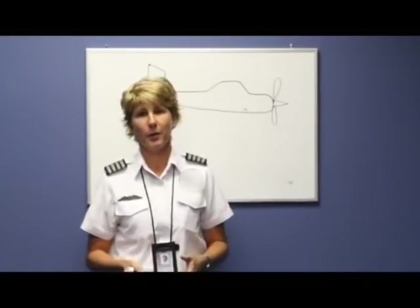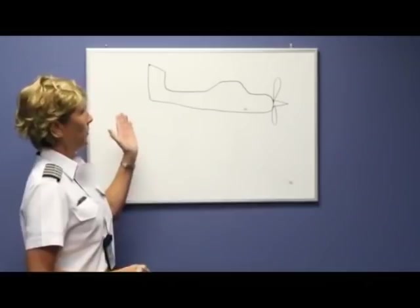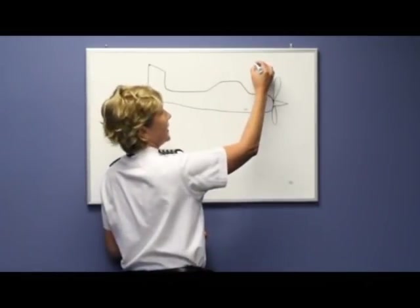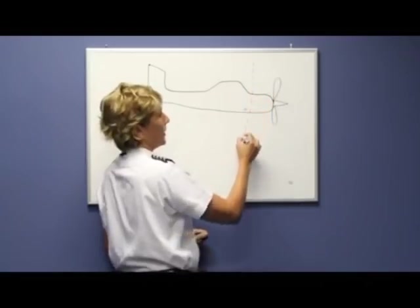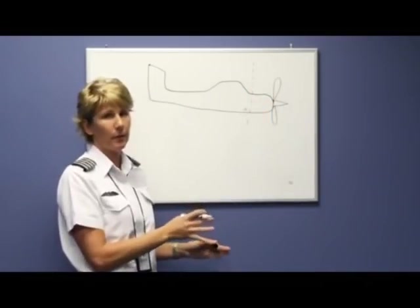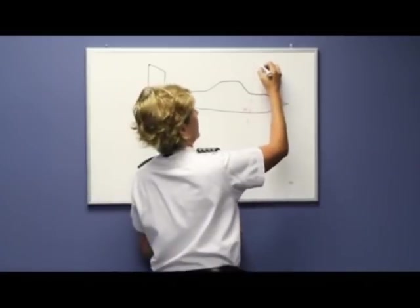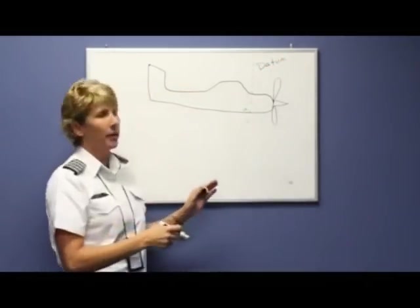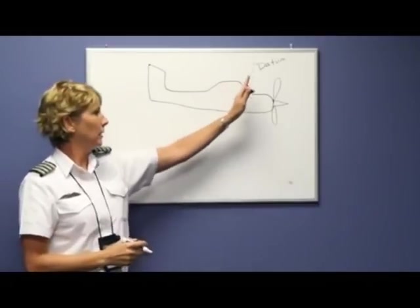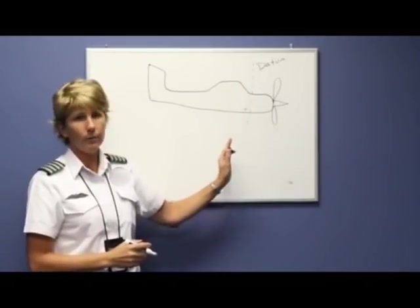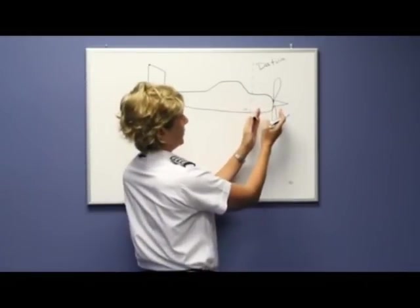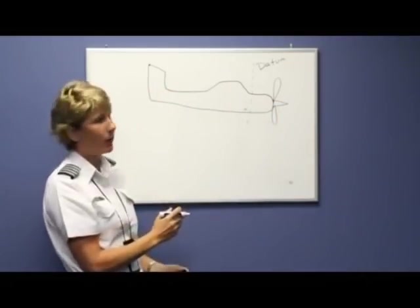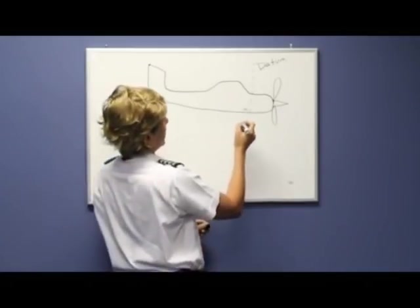Before we begin the calculation, there are a few terms we're going to have to learn. This is a profile view of an airplane. The first term we need to learn is datum line. Datum line is an imaginary line assigned to the aircraft by the manufacturer. It does not change. The datum line in most all of these smaller airplanes is the firewall. Anything in front of the datum line would be considered a negative value, and anything behind the datum line would be considered a positive value.